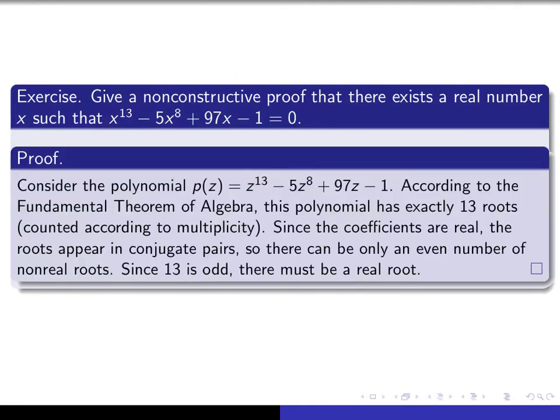Okay, so here's my proof. Consider this polynomial. So now I'm going to apply the theorem to it. So I say, according to the fundamental theorem of algebra, this polynomial has exactly 13 roots, counted according to multiplicity. Since the coefficients are real, the roots appear in conjugate pairs, so there can be only an even number of non-real roots. But since 13 is odd, there must be a real root.